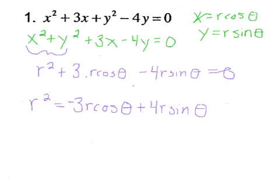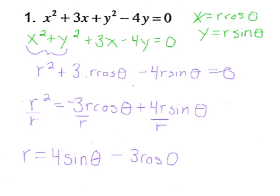And see how each term has an R in it? If each term has an R in it, what you are allowed to do is divide everybody by an R. So our final equation is going to be R equals, and I'm going to write 4 sine theta first because it's positive, minus 3 cosine theta. And that is our polar equation.